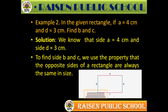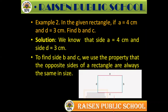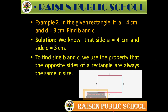Next question: in the given rectangle, if A is equal to 4 cm and D is equal to 3 cm, find B and C. You can see the figure. A is 4 cm and D is 3 cm. Since it is a rectangle, opposite sides are equal. This means C is equal to A, and B is equal to D. So B equals 3 cm and C equals 4 cm.